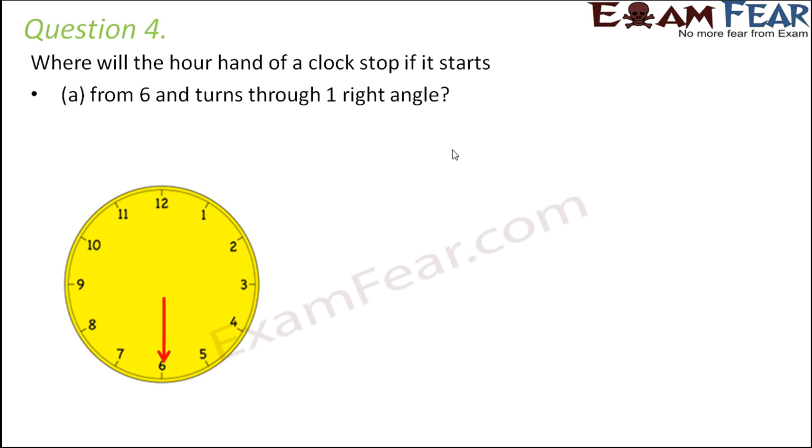So this time it would move in the clockwise direction, which is which direction? This direction. So it will actually move like this. So the rotation would always be like this, in this direction. So it starts from 6 and then turns through one right angle. So let's again divide it into four quadrants, so that makes our job a lot easier. So now you can very easily tell where will it go. So it starts from 6, completes one right angle, so it reaches where? It reaches 9. So this would stop at 9.